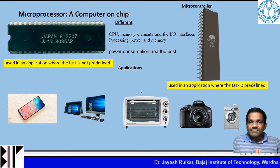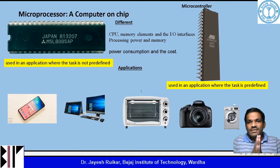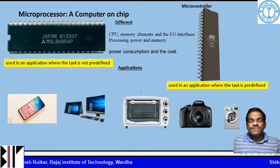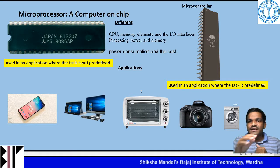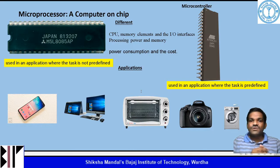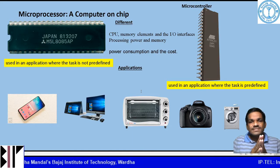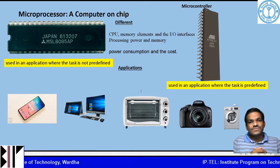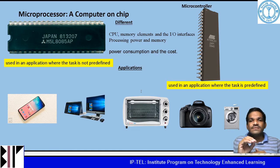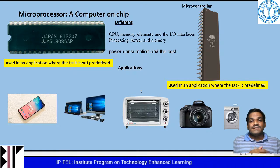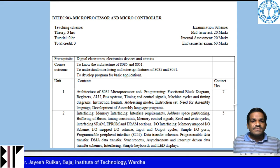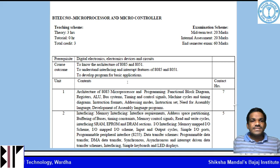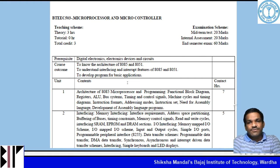In a microprocessor system there is no predefined task, whereas in a microcontroller there is a predefined task. For example, in a microwave oven, once you set the power and timing it gives you cooked food. In a washing machine, once you set the parameters it gives you clean and dry clothes. The microcontroller is used when the task is predefined — just remember that.